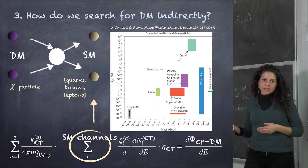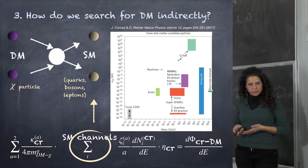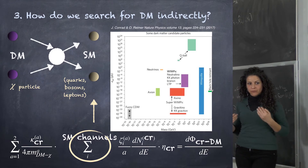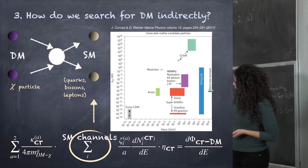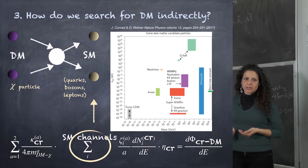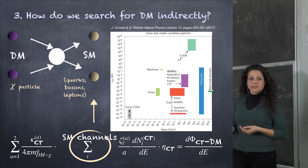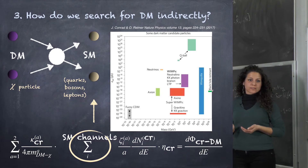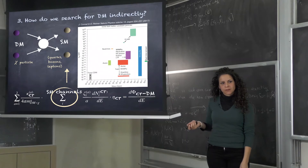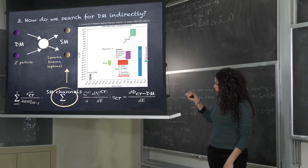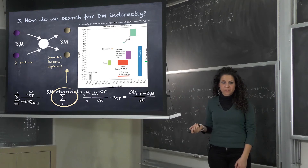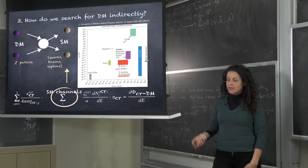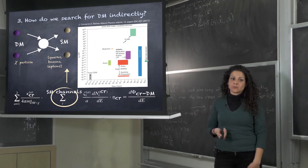Dark matter particles are annihilating or decaying and generating standard model particles. The particles generated in the standard model are related to the particle physics model for dark matter's nature. The mass of the dark matter particle is related to the energy of the event, while the standard model channel — which can be quarks, leptons, or bosons — is strictly related to the dark matter model. You can see the range of parameters associated with WIMP dark matter, and there is an extended range of candidates assuming cold dark matter.